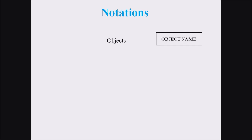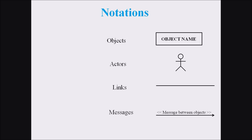The different notations include: object, represented with a rectangle with an object name; actors, represented by an actor symbol; link, represented by a line; and message, represented with a label above an arrowed line.